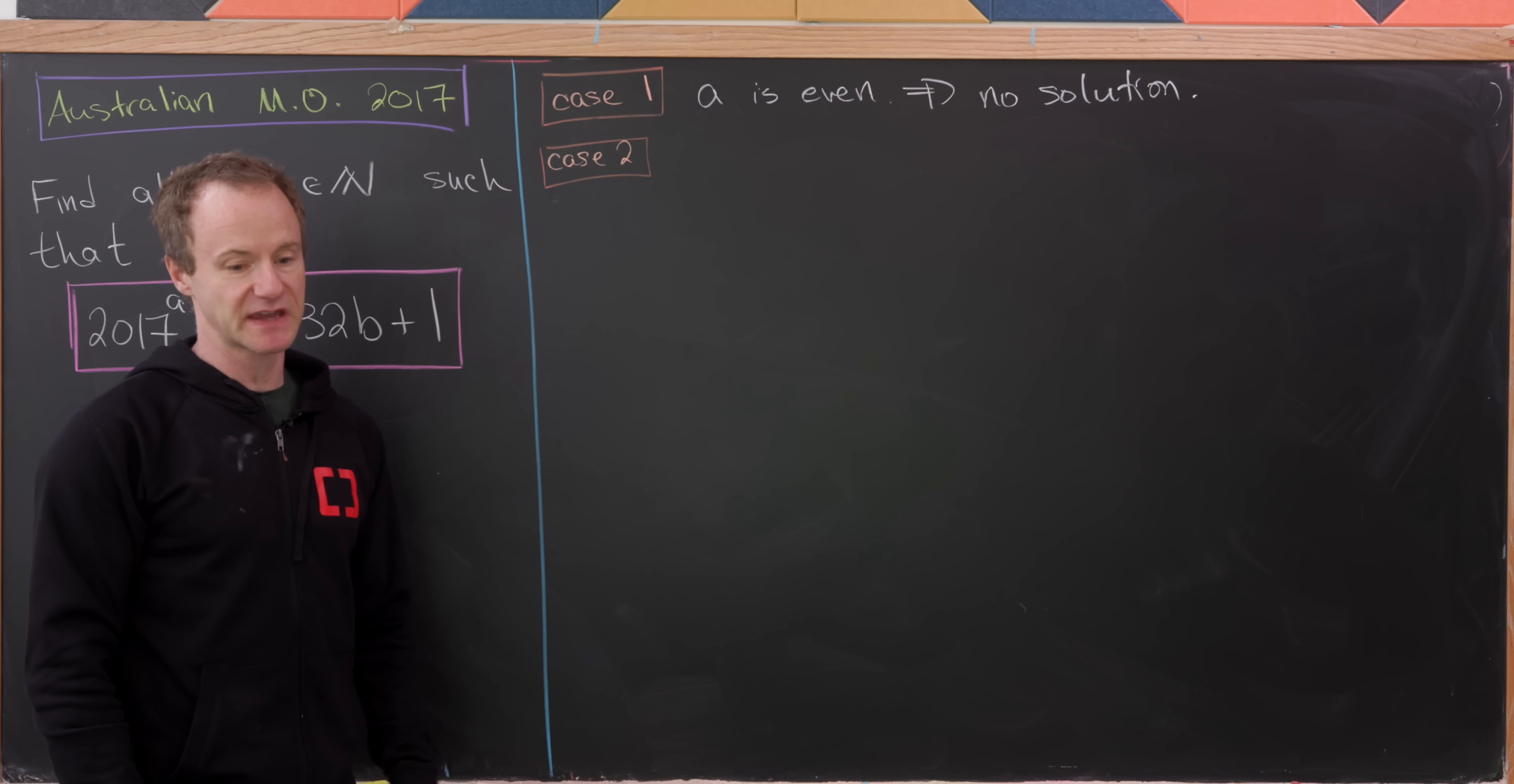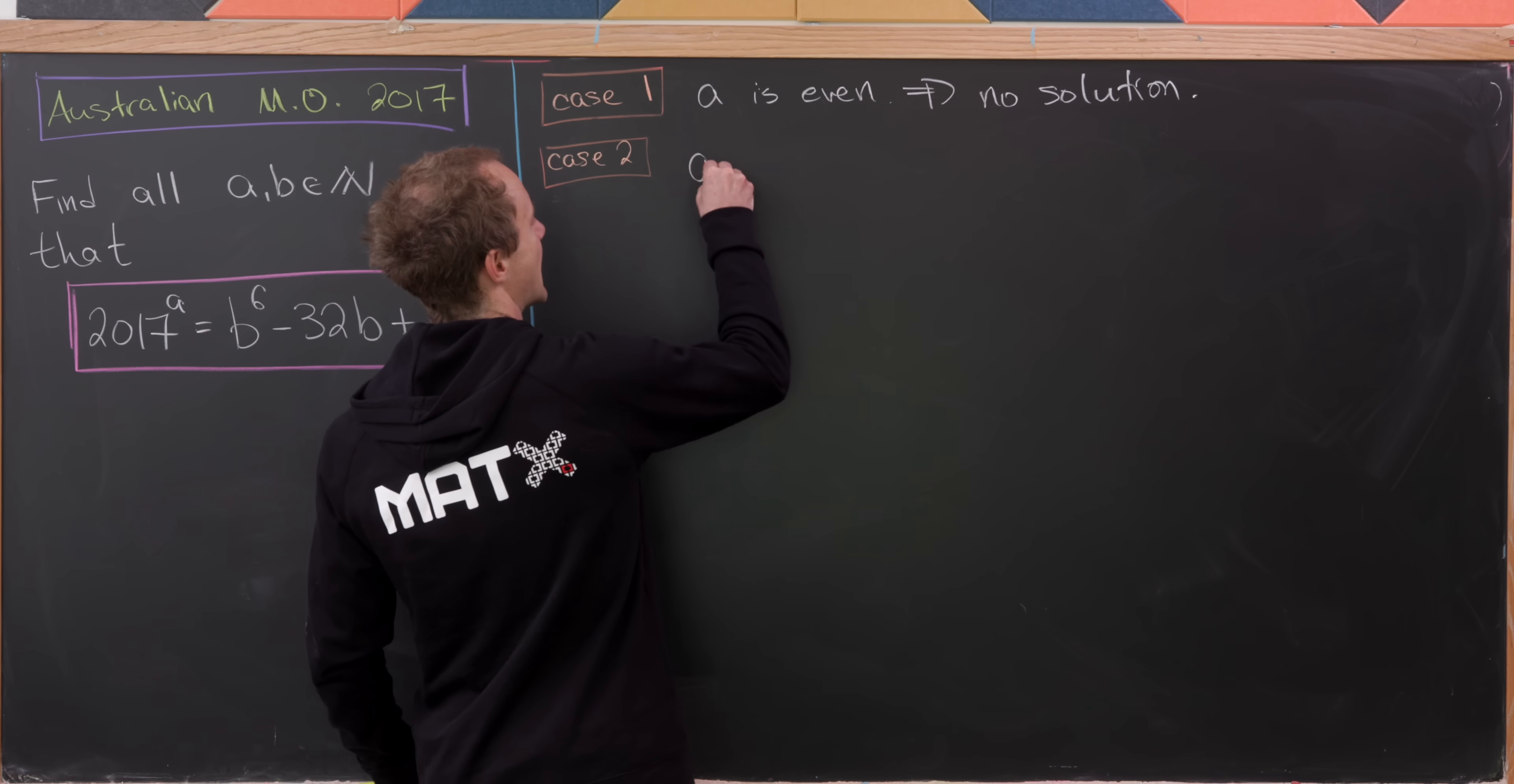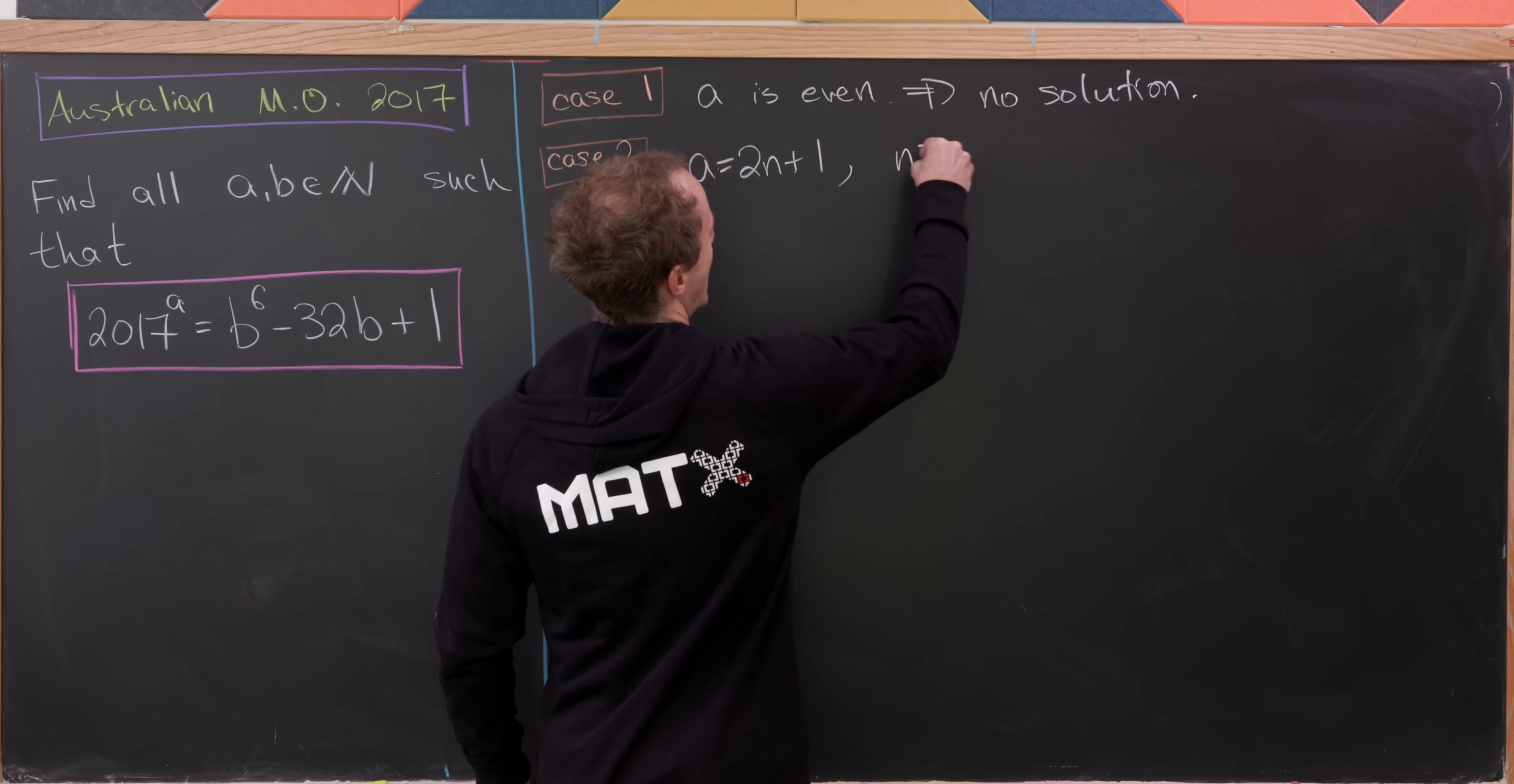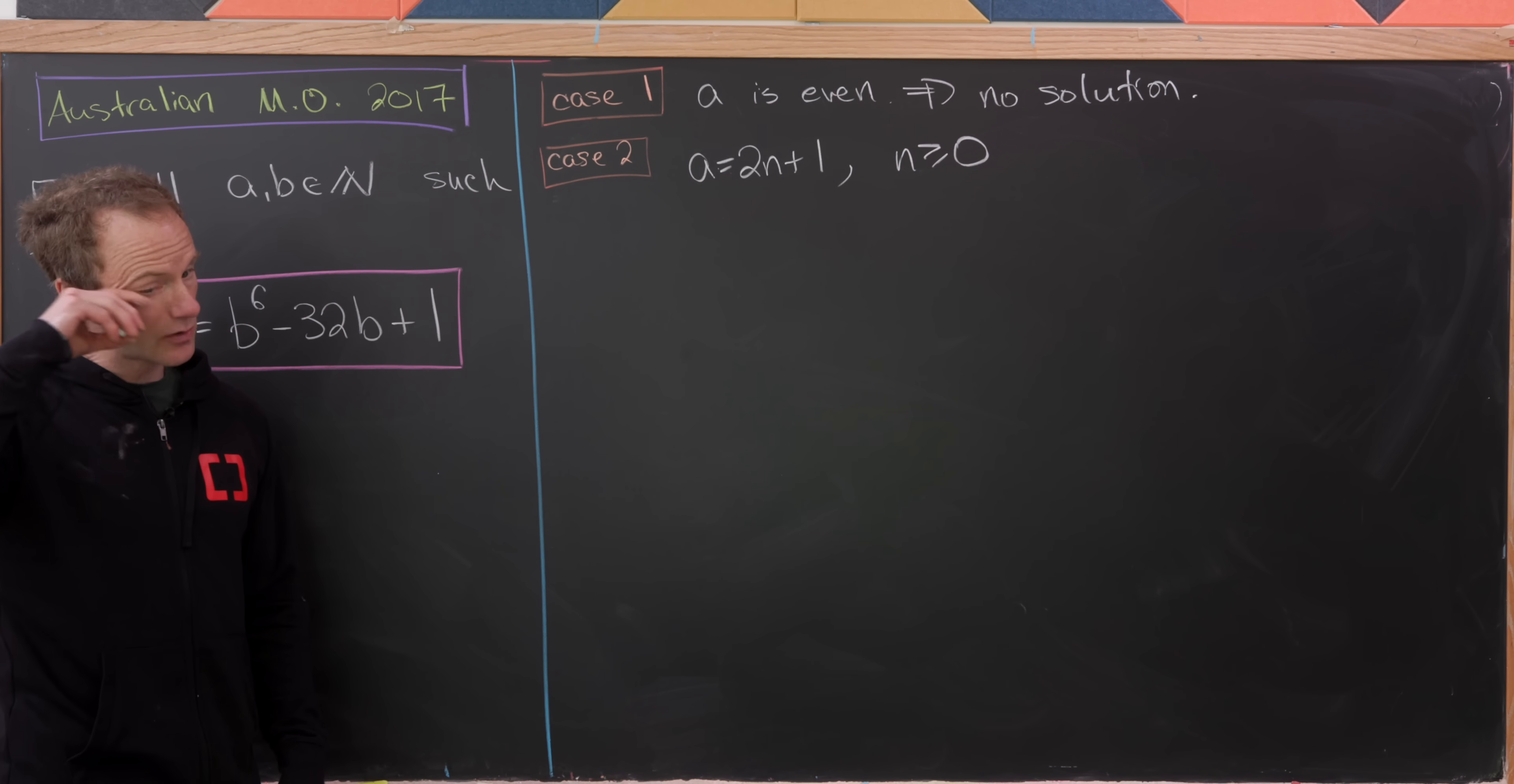So we just worked through this first case when A was even and we saw that we had no solution. Now let's look at the case when A is odd. So in other words, we can write A as 2 times N plus 1, where N is now a non-negative integer.